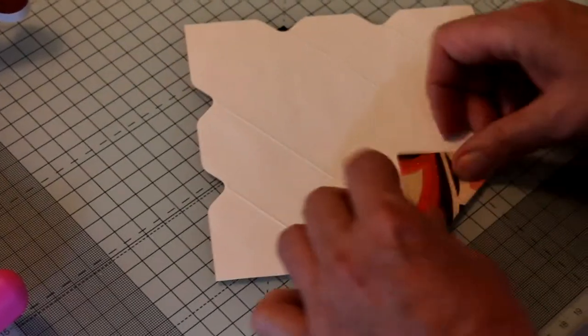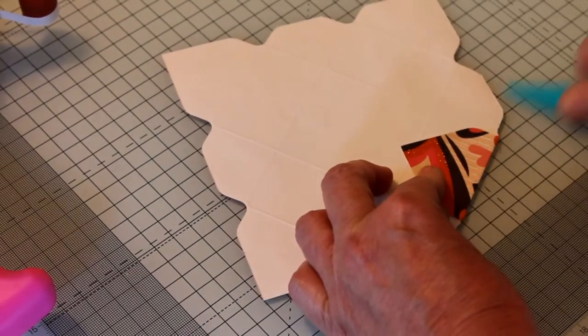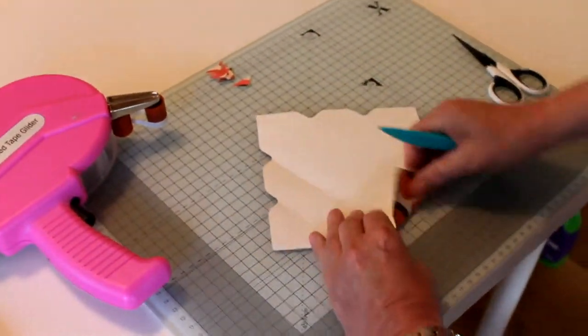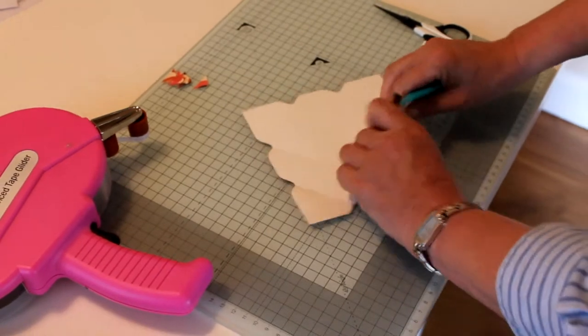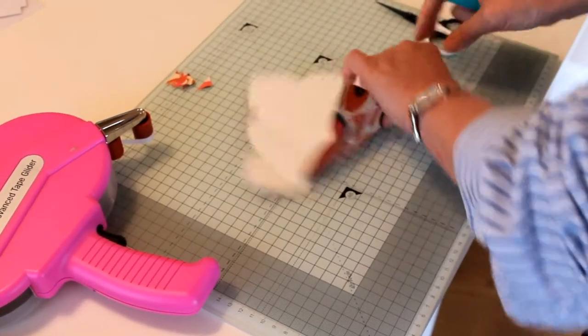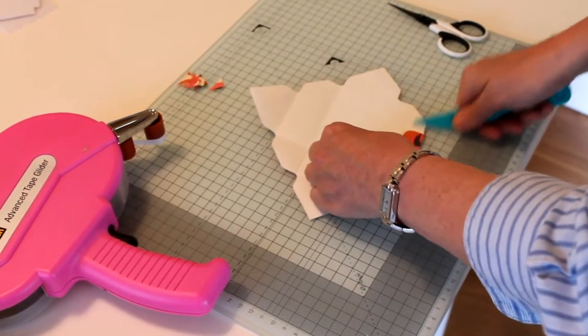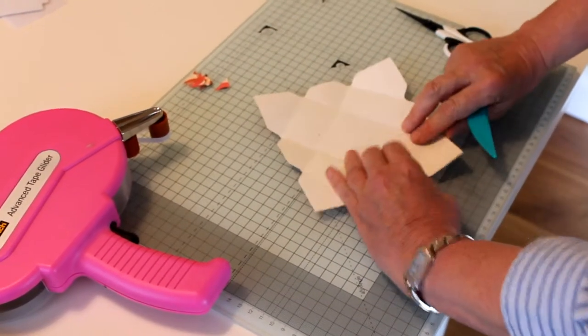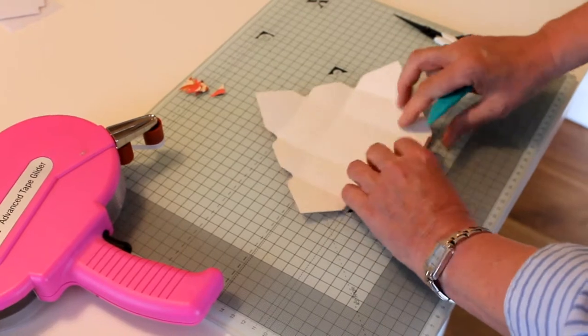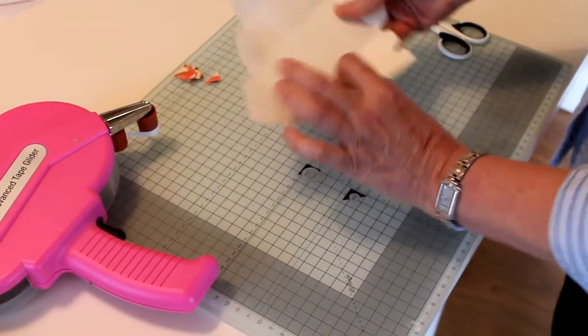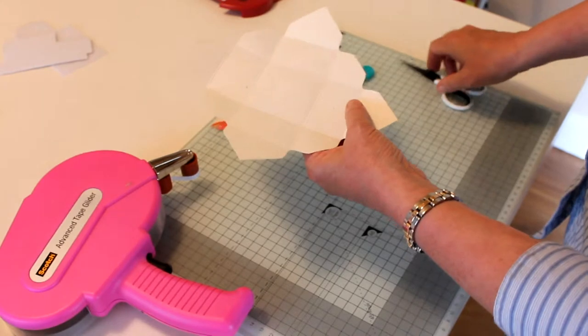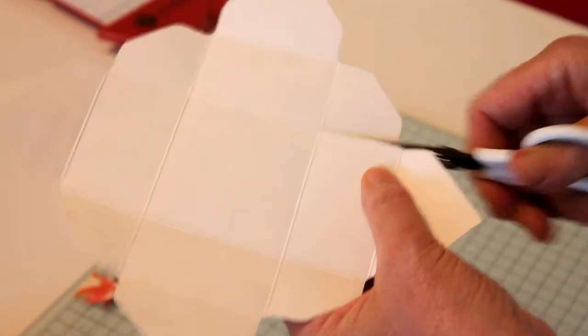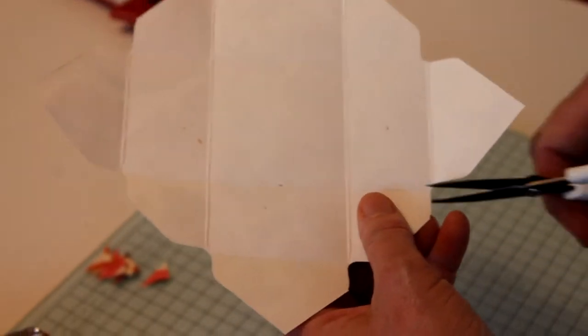Like that. Then we simply cut along here until you meet the score line, the same on this side and then the opposite side, do the very same.